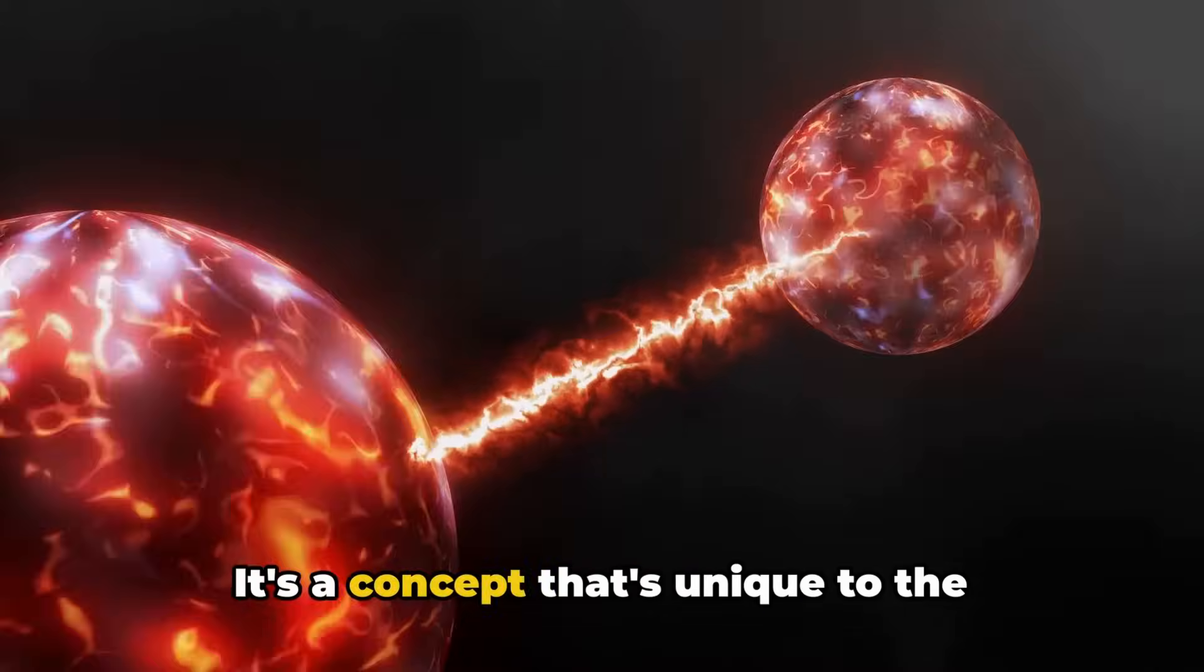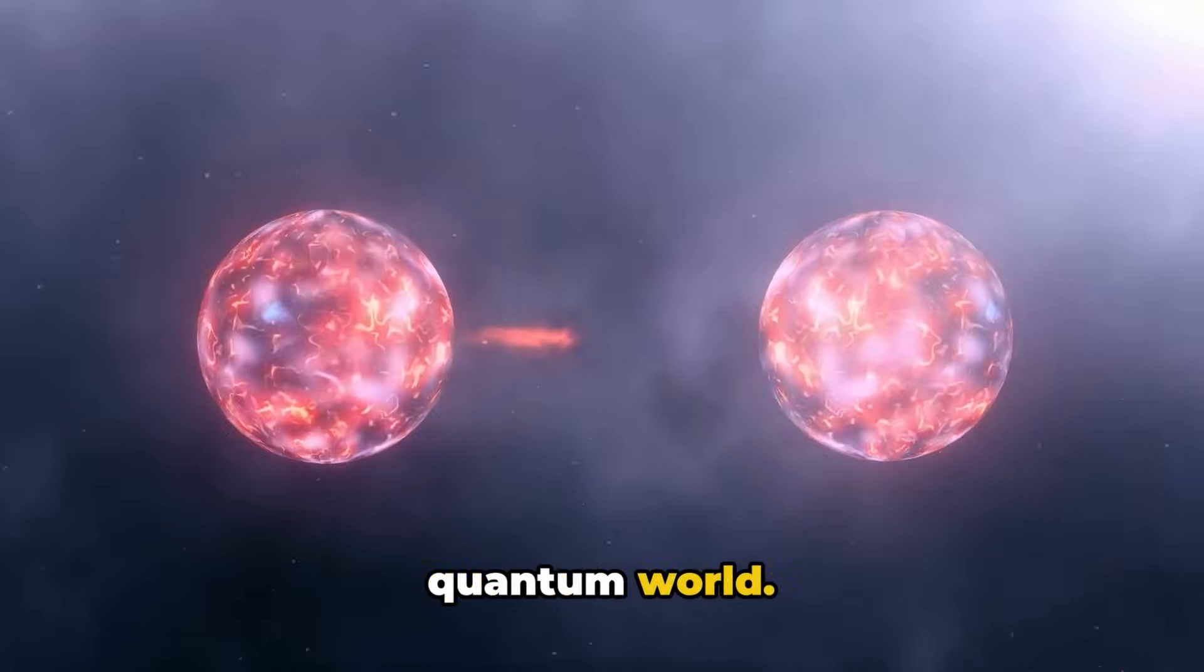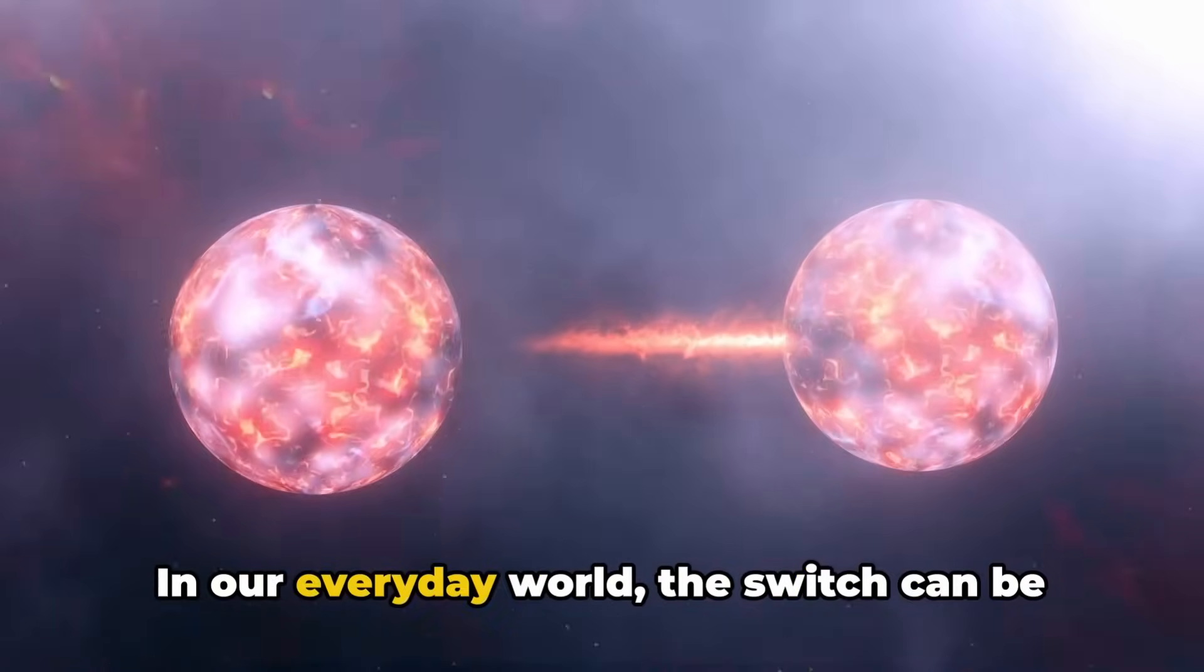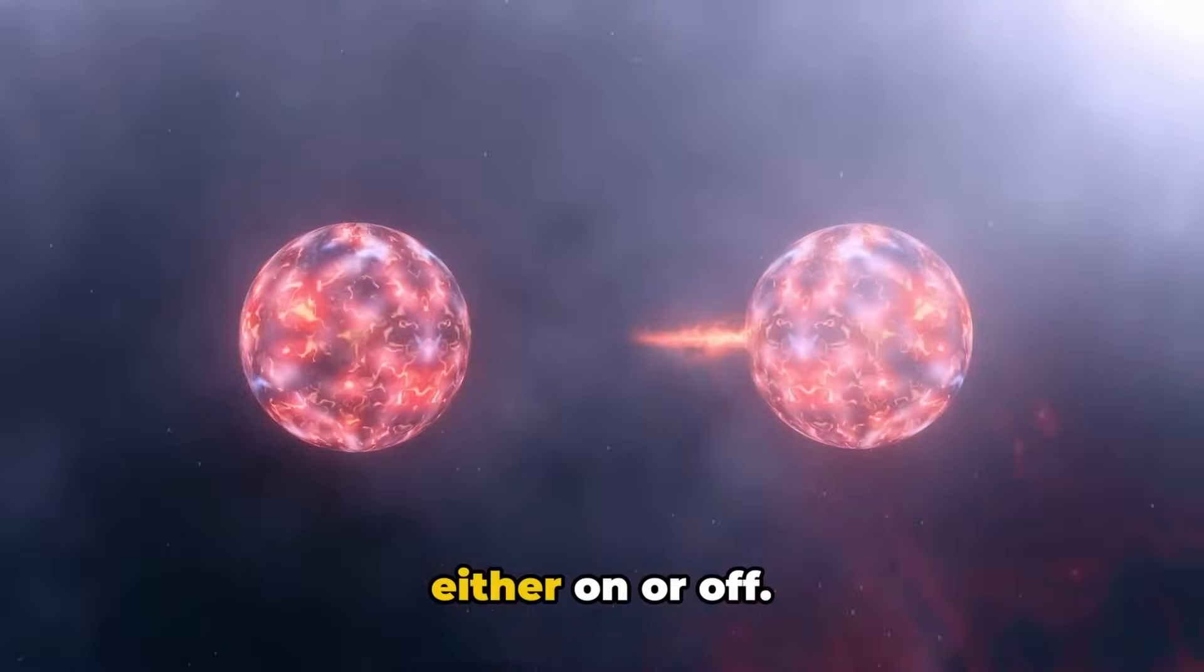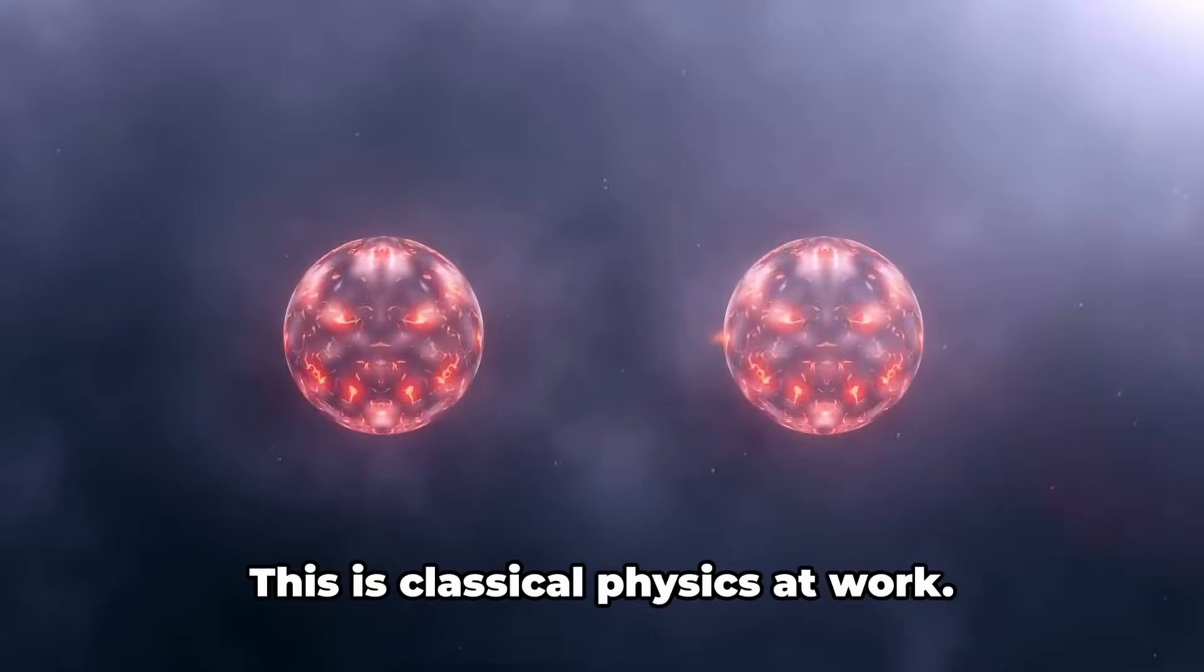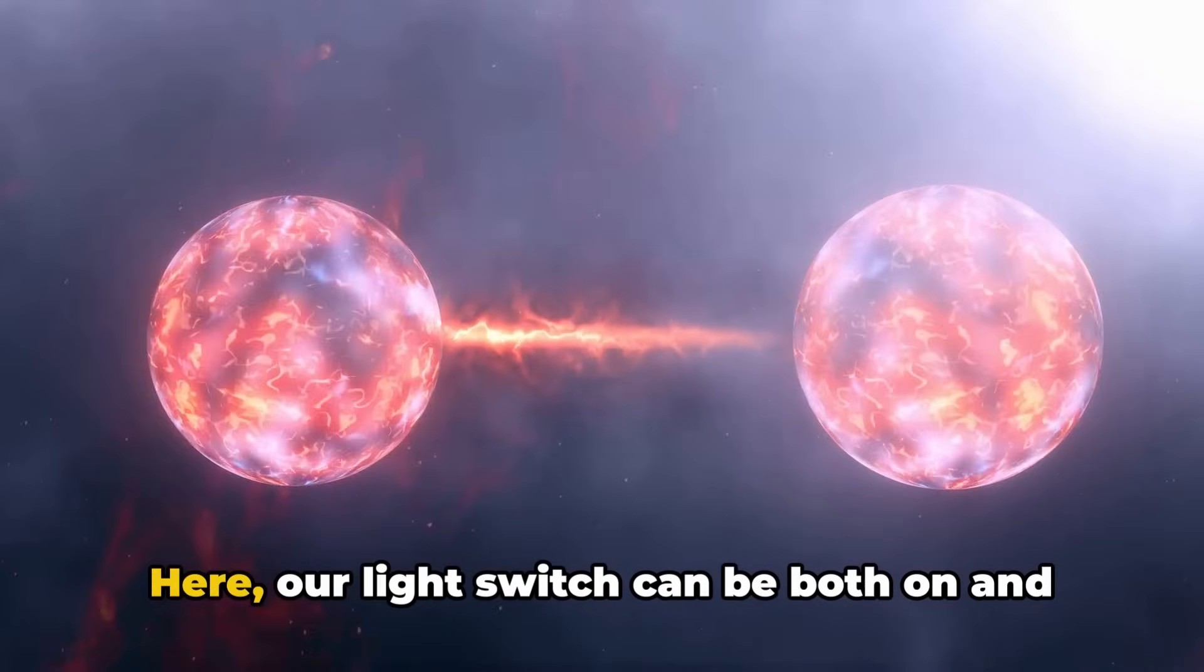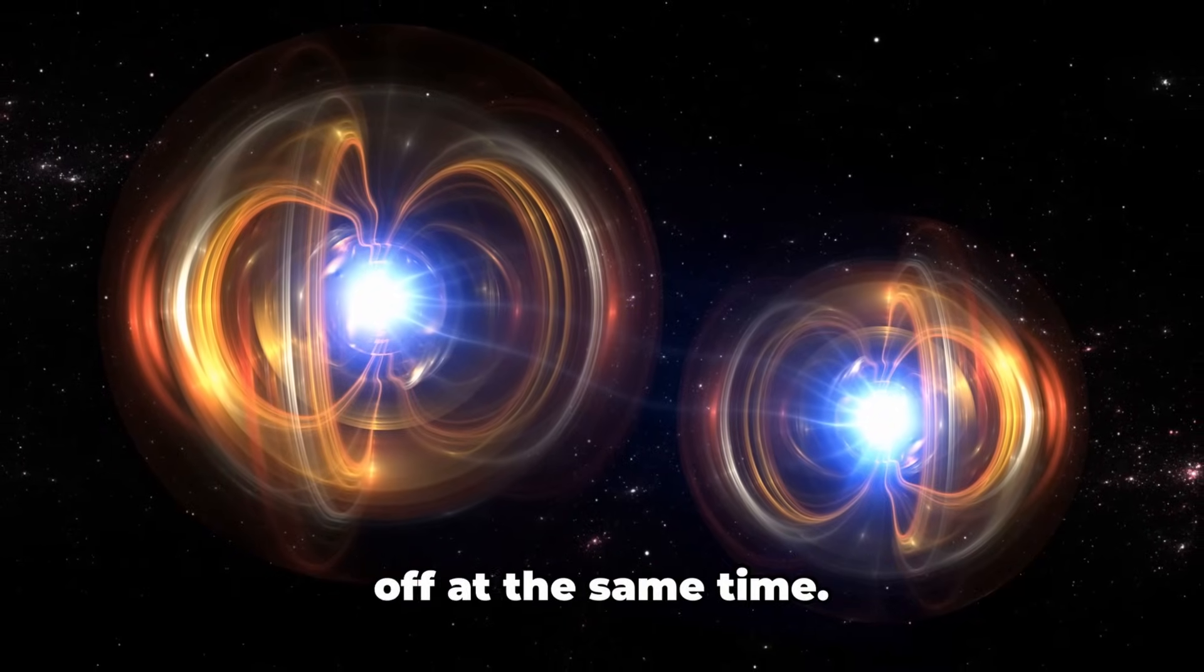To help you understand, let's imagine a light switch. In our everyday world, the switch can be either on or off—there's no in-between. This is classical physics at work. Now let's step into the quantum realm. Here, our light switch can be both on and off at the same time.